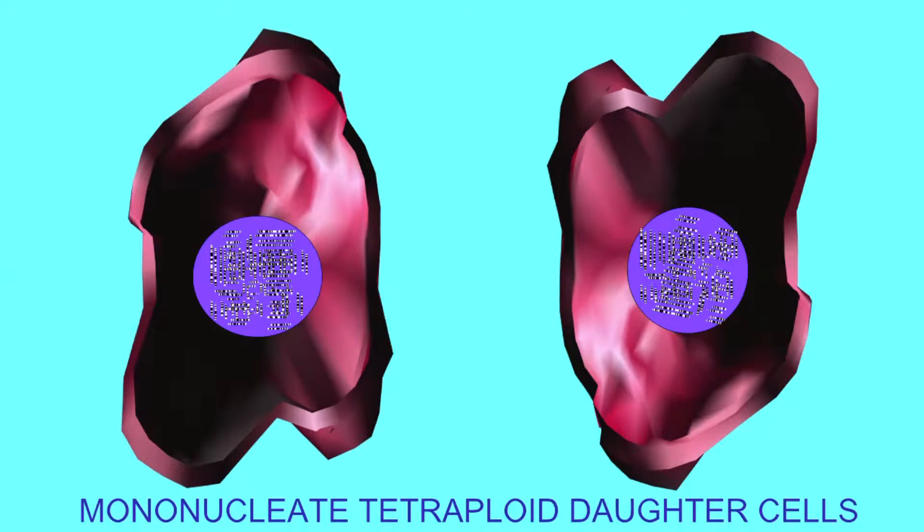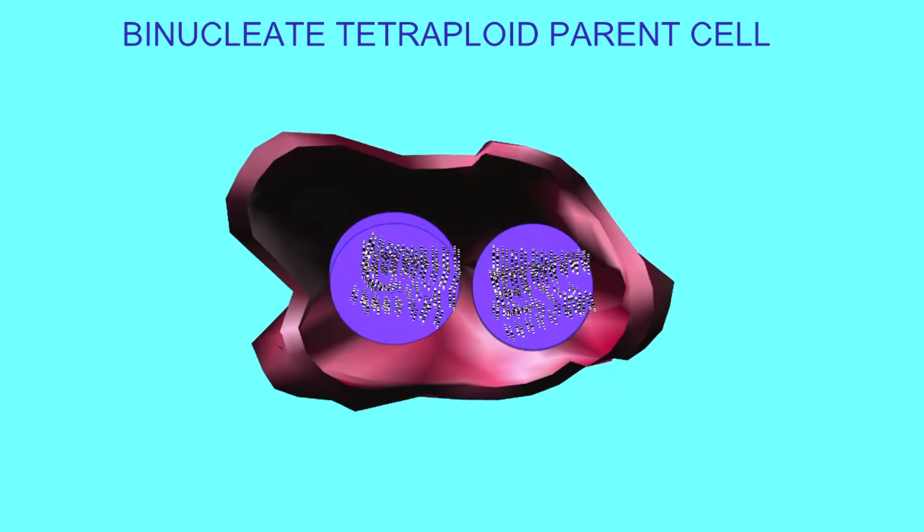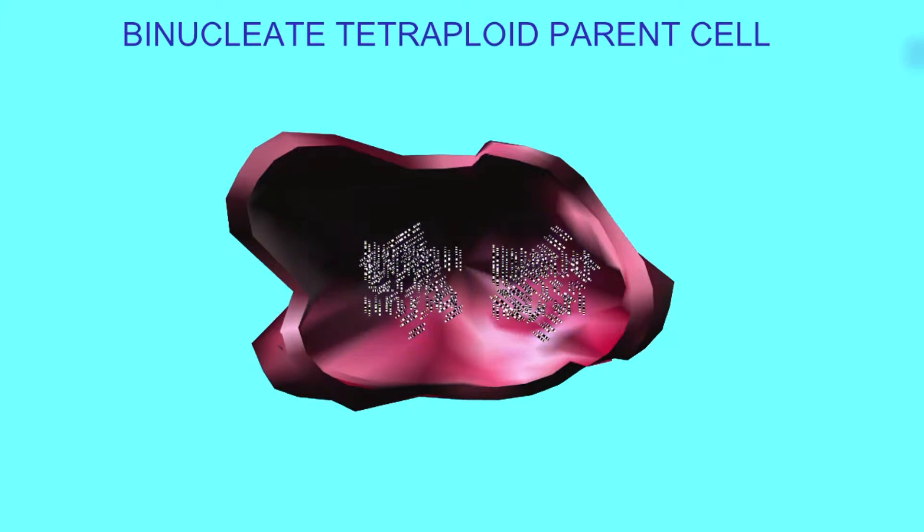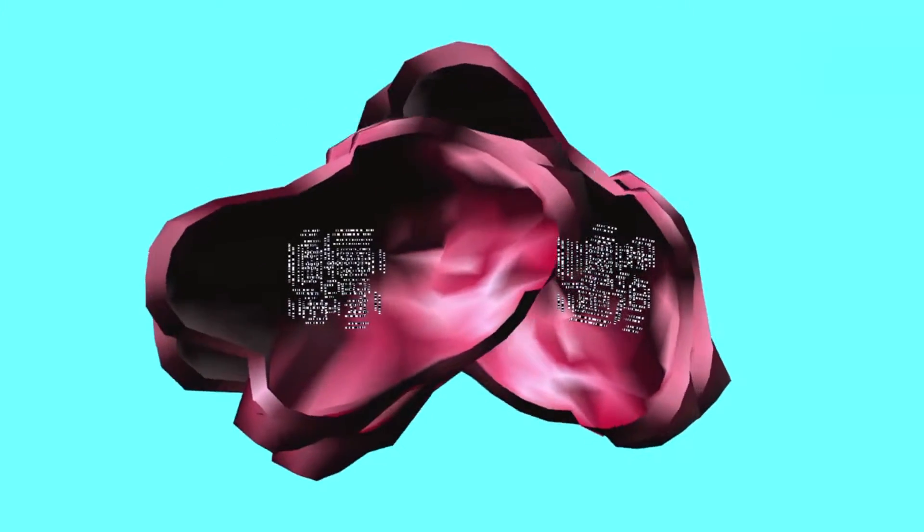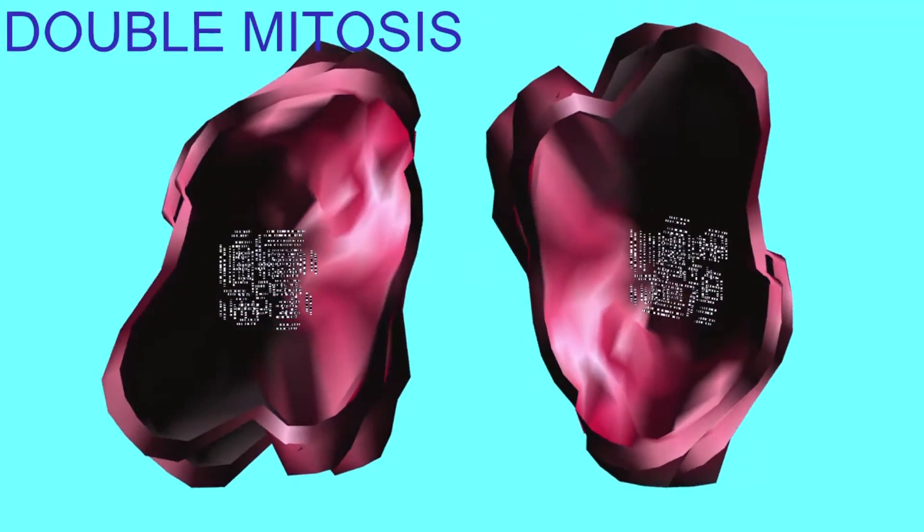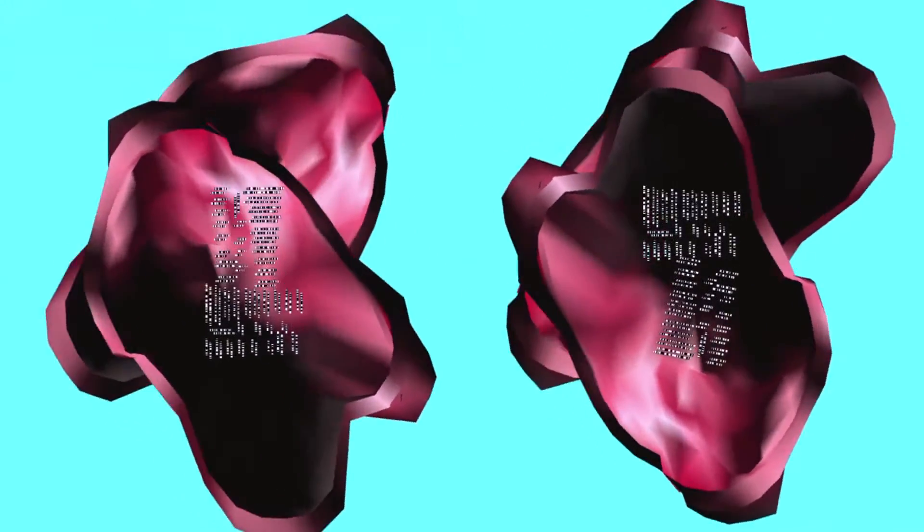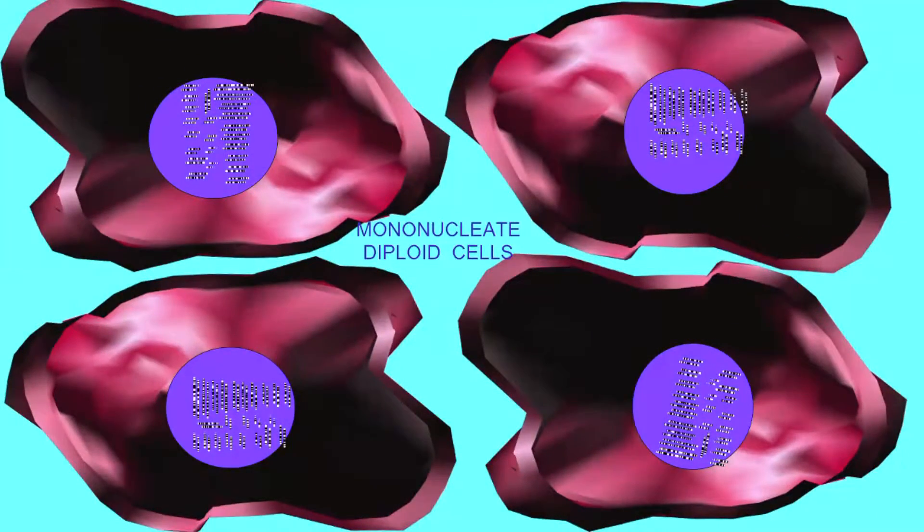It is also possible that when a binucleate cell divides to form two mononucleate cells which are tetraploid, that a second mitotic division then follows without DNA replication, a double mitosis. And this could then result in four diploid daughter cells.